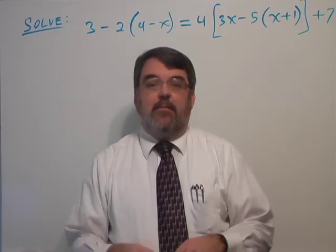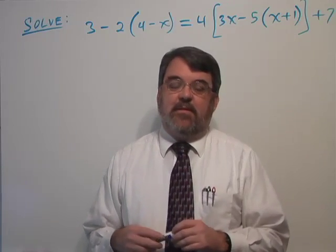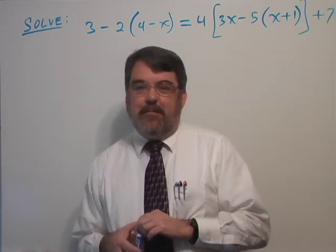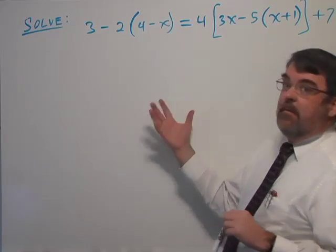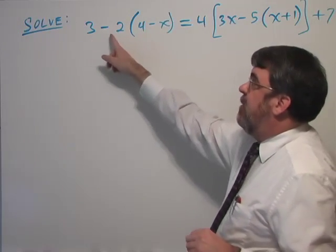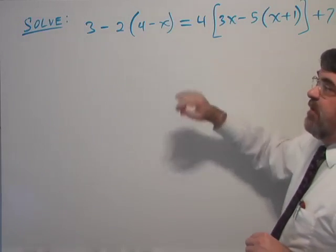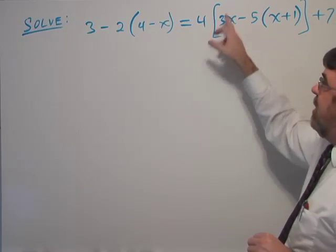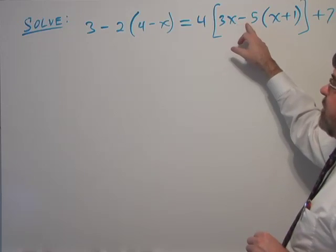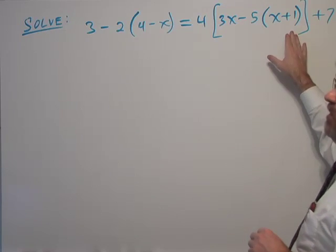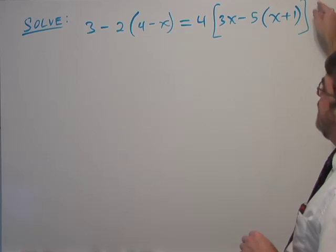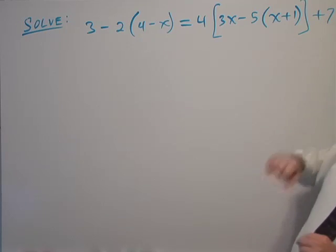Here's our first problem. I'm in the habit of reading these problems to make sure it's clear from the video. I'm going to solve for x: 3 minus 2 parentheses 4 minus x equals 4 times bracket 3x minus 5 parentheses x plus 1 close bracket plus 7.